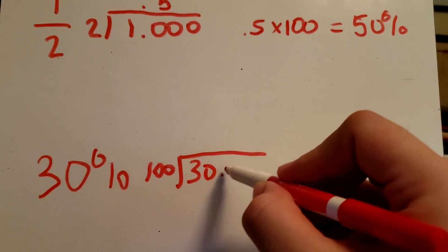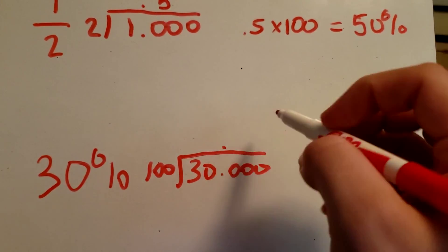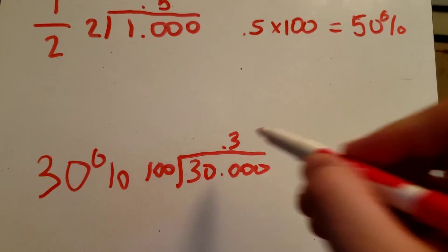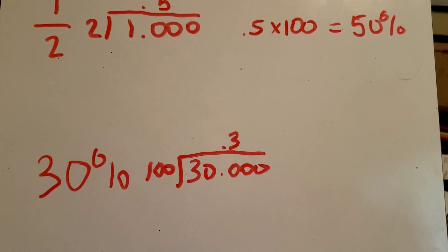30 divided by 100. When we do that, we're going to get 0.3. So that's our fraction.